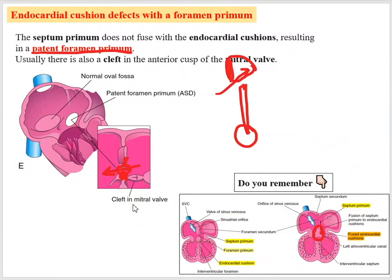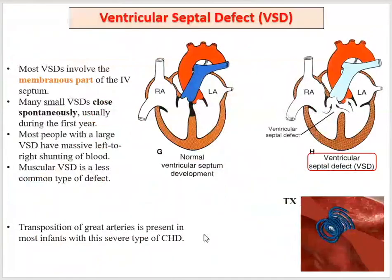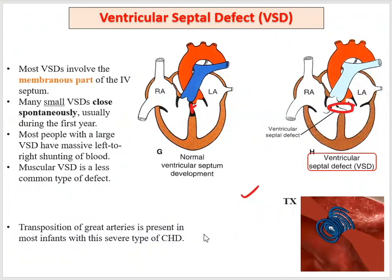The endocardial cushion participates in the formation of the membranous part of the interventricular septum, plus the proximal part of the bulbus cordis also contributes. When there is a failure in the formation of the membranous part of the interventricular septum — due to failure of the endocardial cushion or the proximal part of bulbus cordis — you would expect a ventricular septal defect.